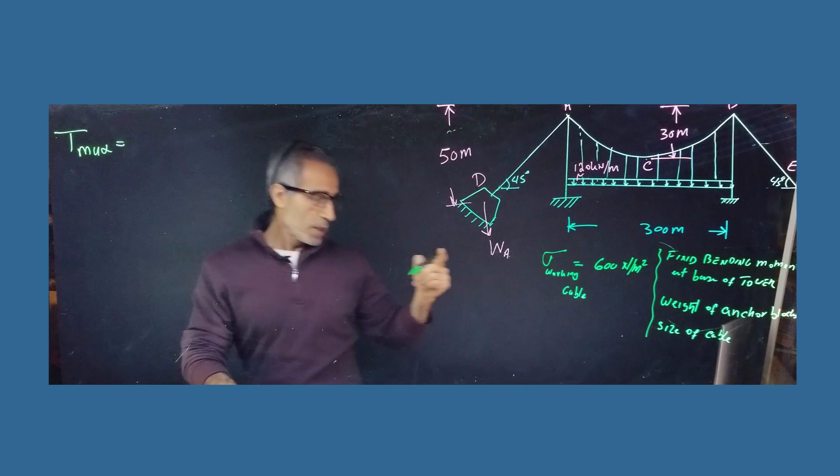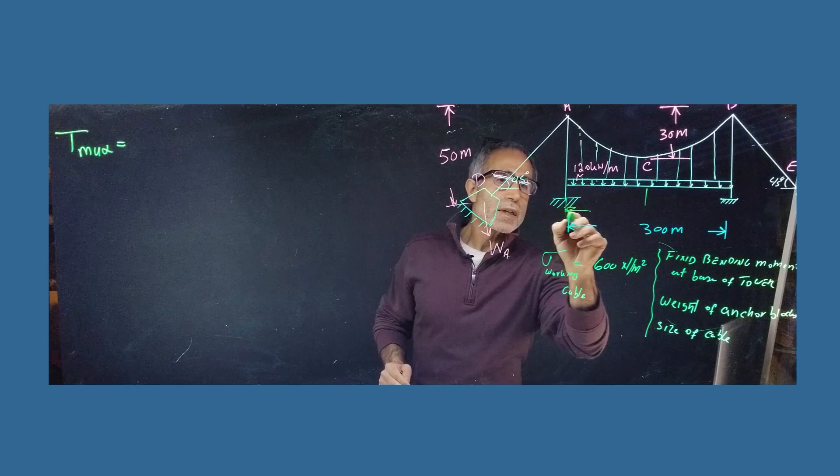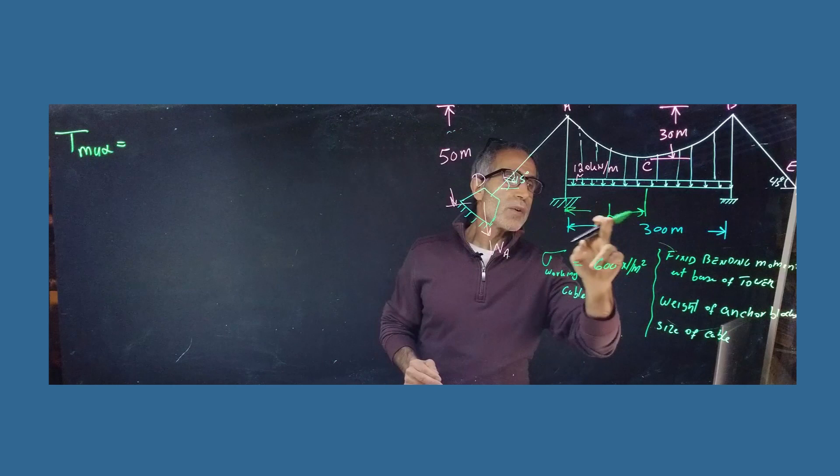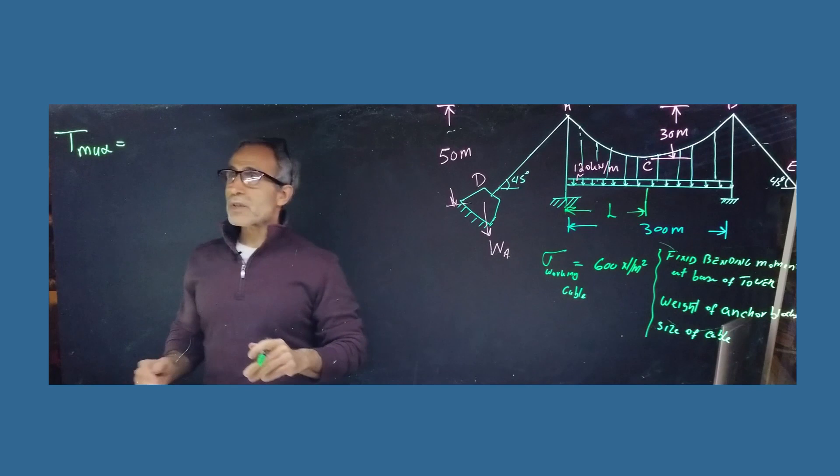going back on the same picture, the L, L is basically right here, and if you come down right here that's our L in this formula. So if we have 300 meter, our L basically is going to be 150 meter.